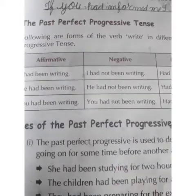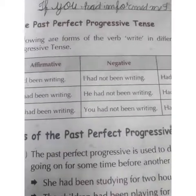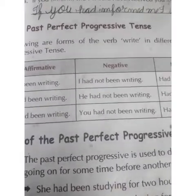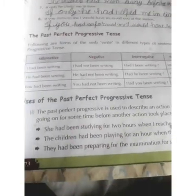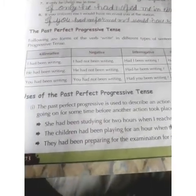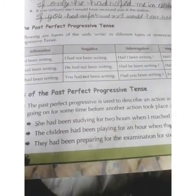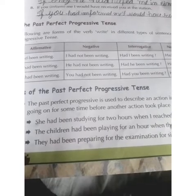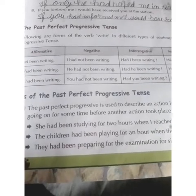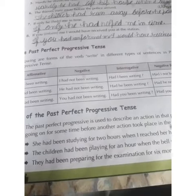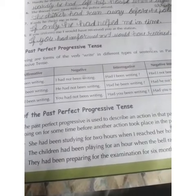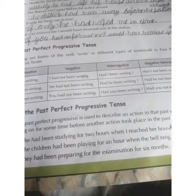So now we will read the uses of past perfect progressive tense. The past perfect progressive tense is used to describe an action in the past which had been going on for some time before another action took place in the past.